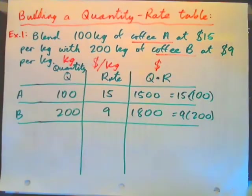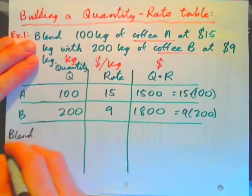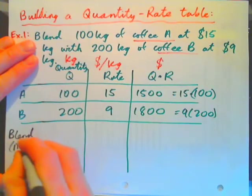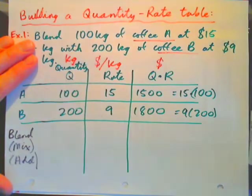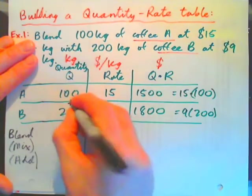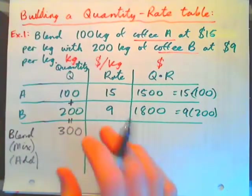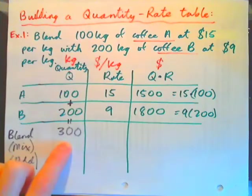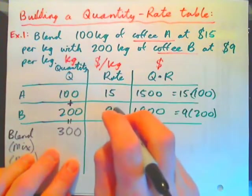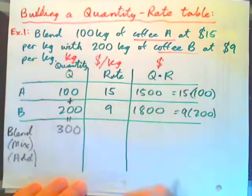Now, we always, with these quantity-rate tables, we always do another row, and this is the blend, or when we add them together, when we blend or mix or add the two items together. And so we do this, 100 plus 200 goes here. So if we mix these two coffees together, we'll have 300 kilograms total, correct? Now, adding 15 plus 9 to get 24 doesn't make any sense at all. Because this is the rate column. We'll come back to that.